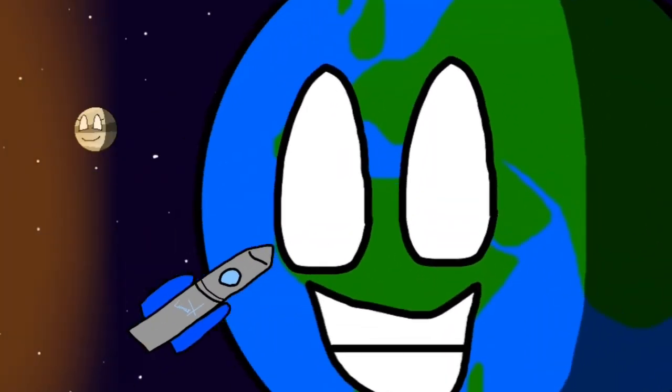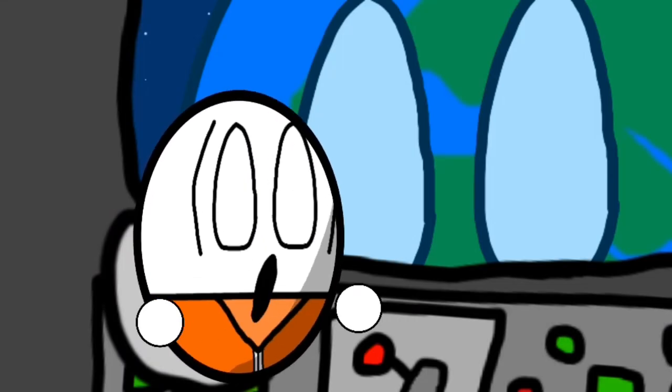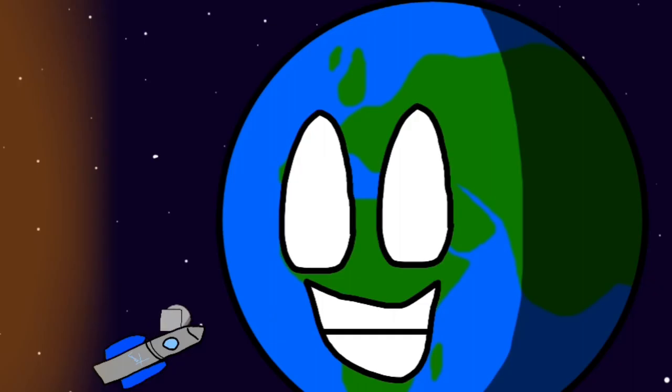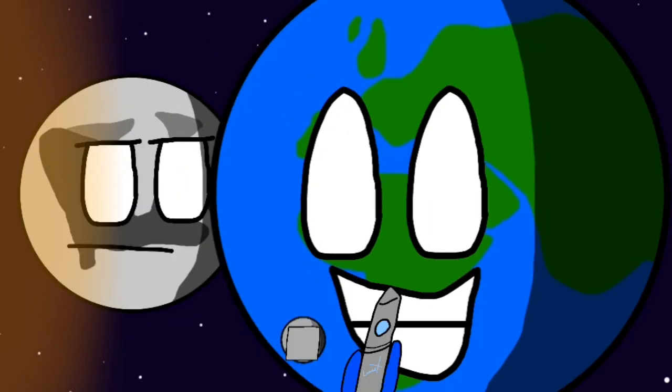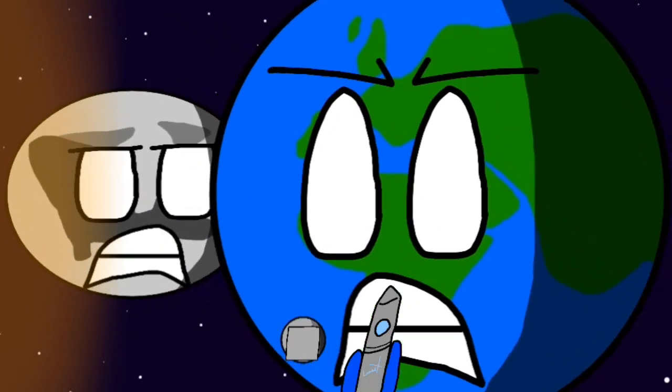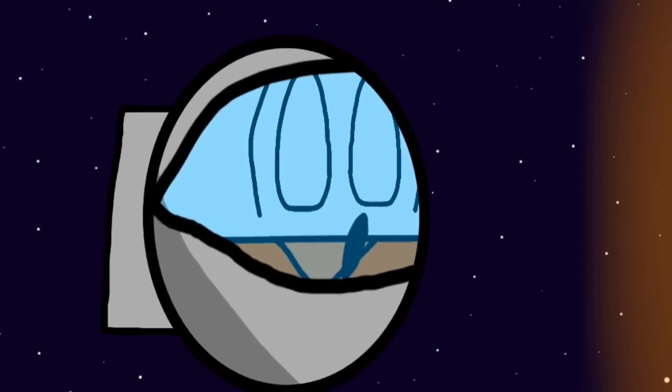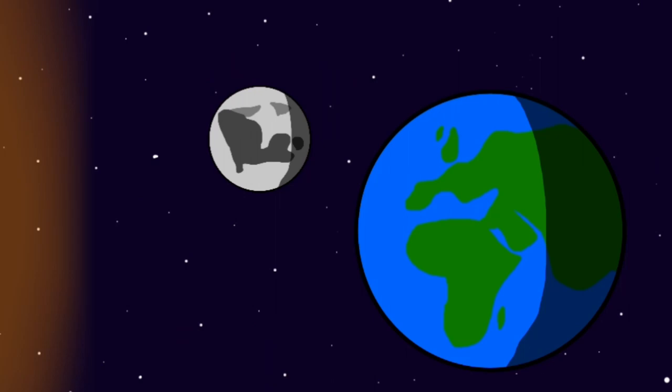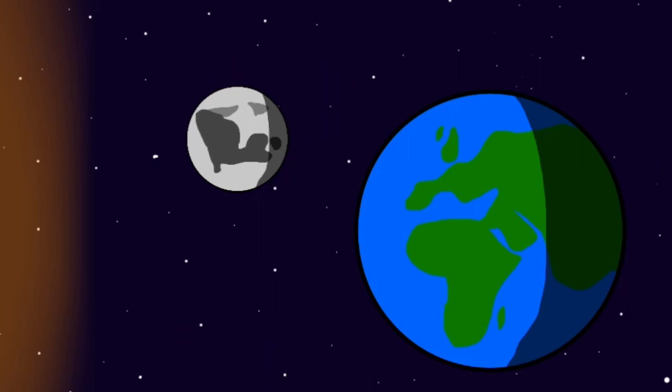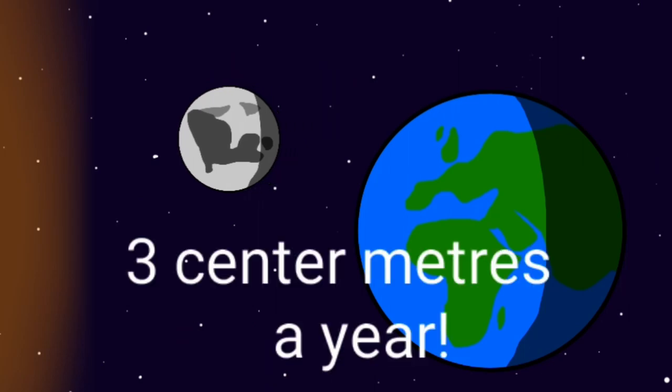Hey, astronaut guy! Oh, it's just you guys. Well, what do you want? I just wanted to... Earth thinks that I've moved further away from him in the last year. Well, it's true. Every year, the moon moves around three centimeters away from Earth.